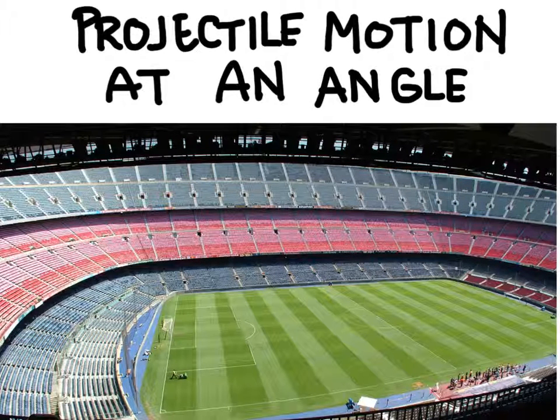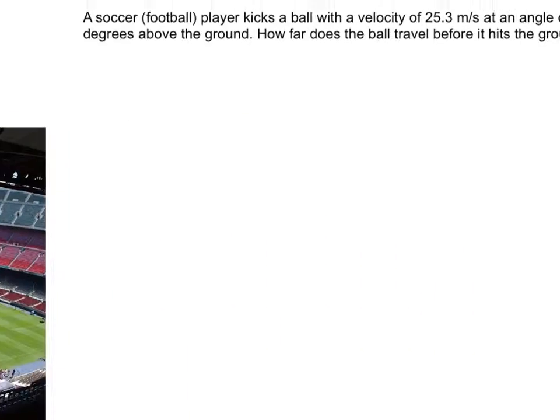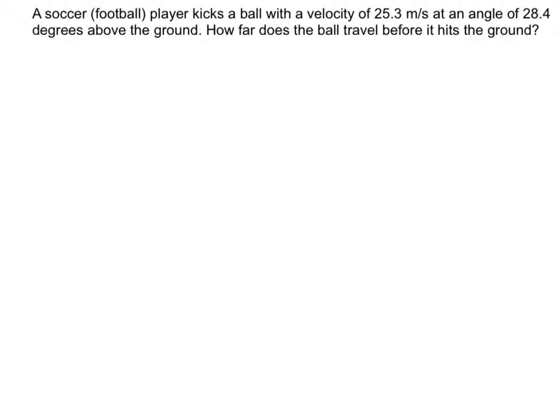In this video we're going to solve a problem involving projectile motion at an angle. I'm going to read through this question and as I read it I'm going to underline the given information in green and then what the question is asking for in red. This will help me to solve the problem later. A soccer player kicks a ball with a velocity of 25.3 meters per second at an angle of 28.4 degrees above the ground. How far does the ball travel before it hits the ground?